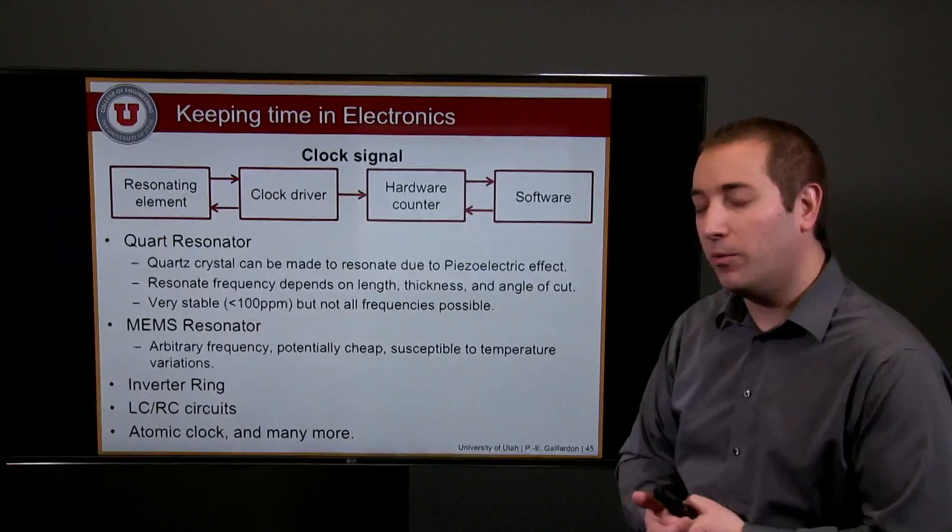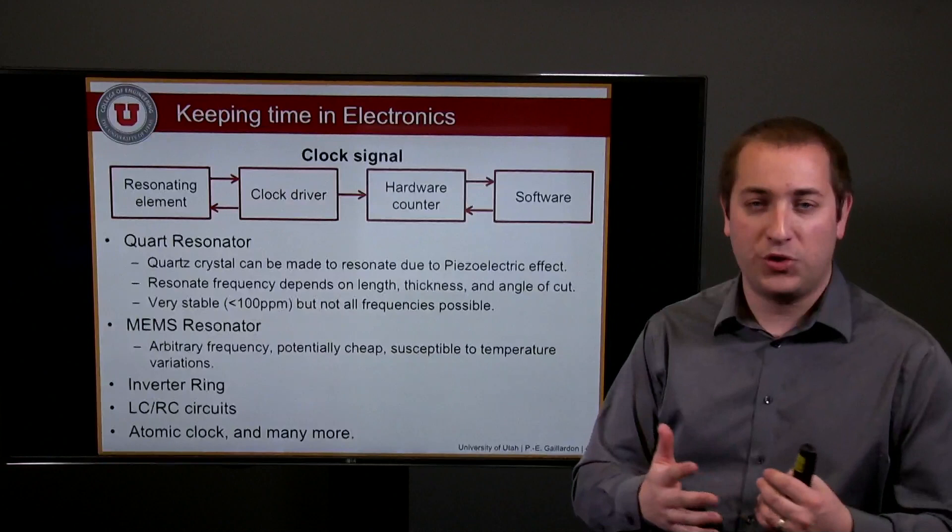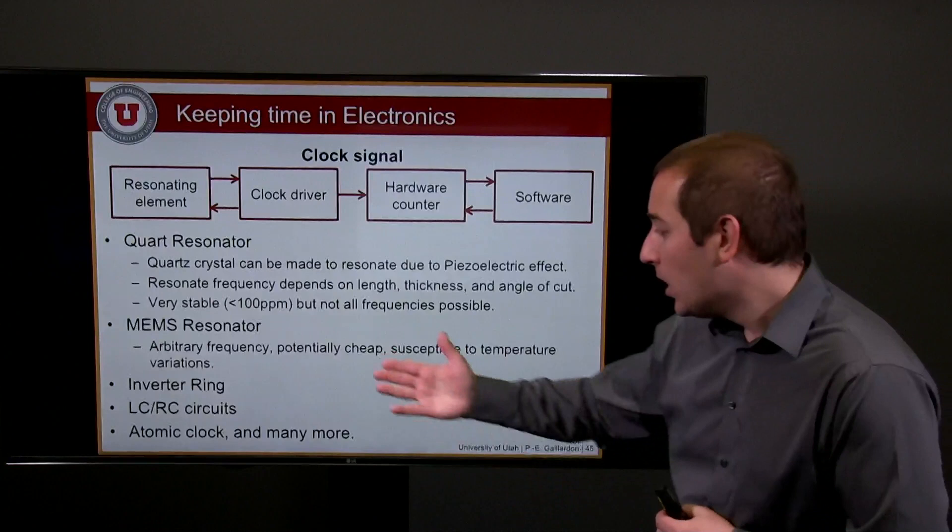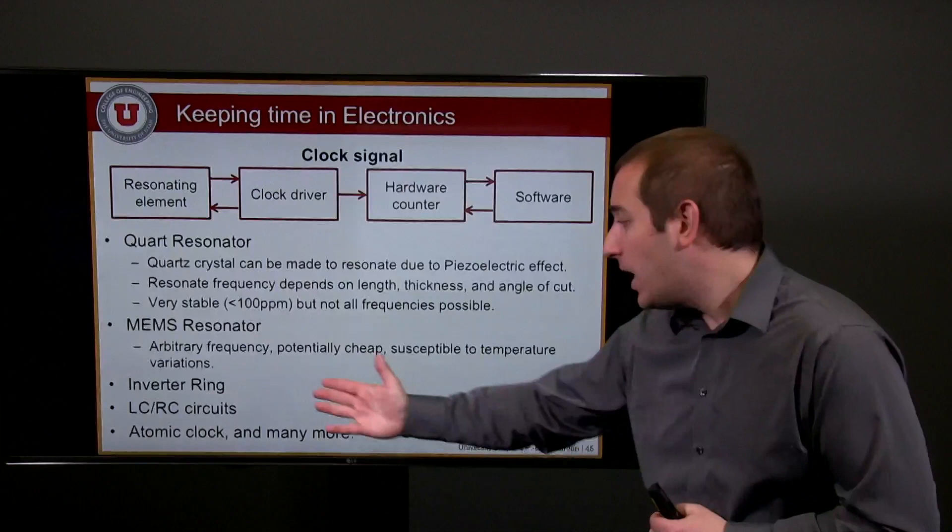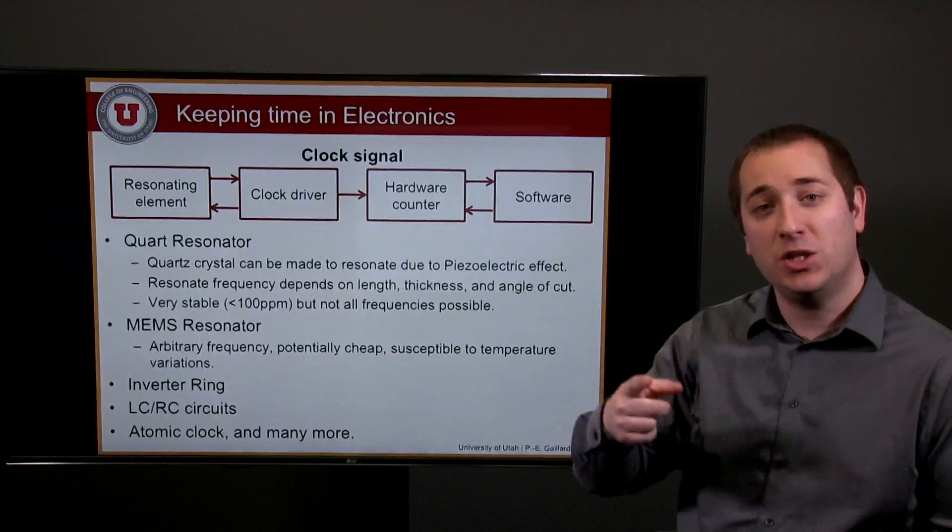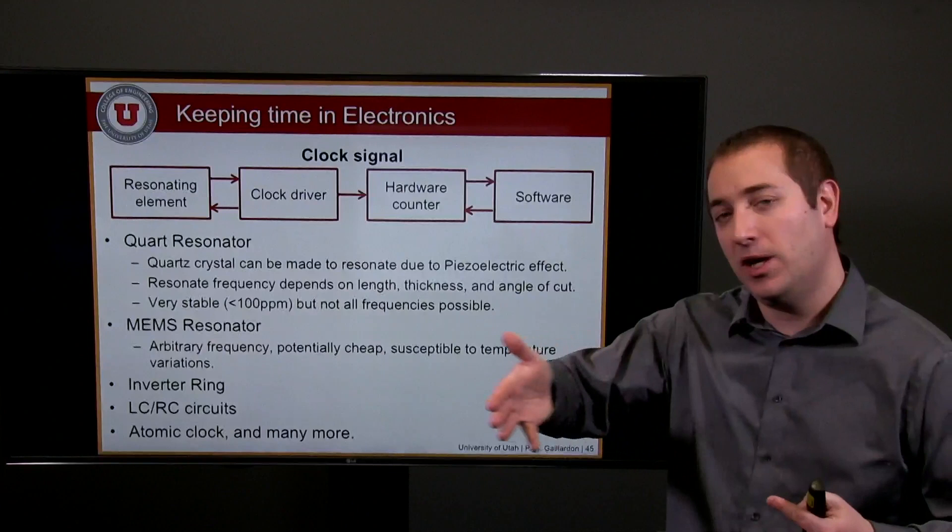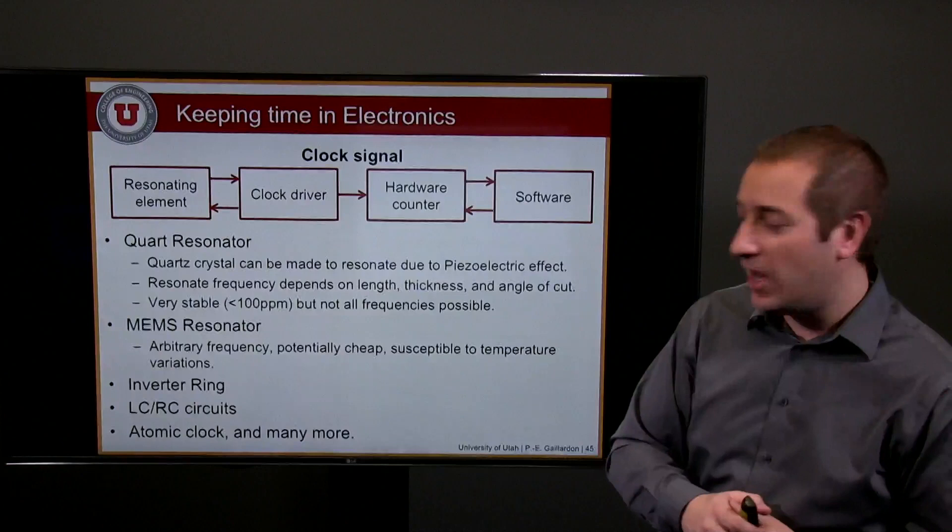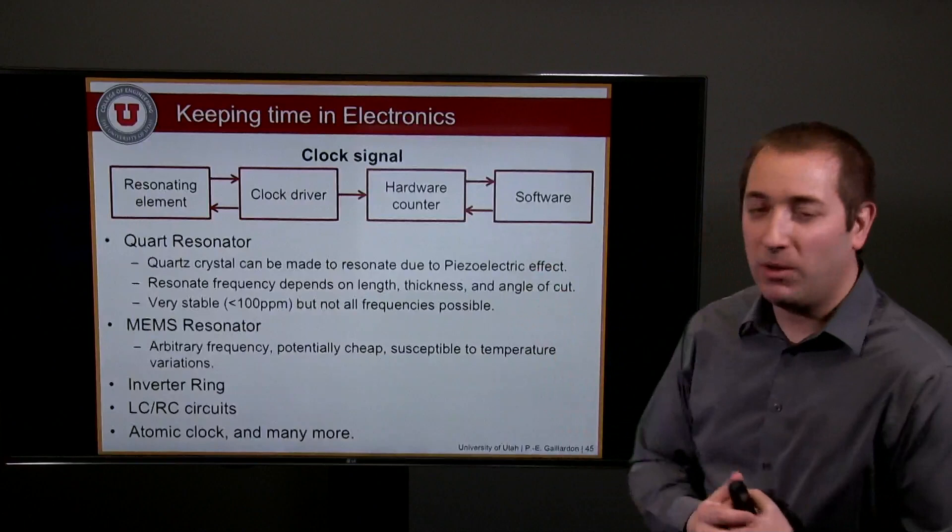Other circuits, more so coming from the CMOS or VLSI technology, will be inverter rings, ring oscillators that will resonate at a given clock frequency, as well as LC and RC circuits, where you'll be able to create oscillations and you'll make sure to add op-amps to regenerate your signal, so you always keep generating a proper frequency for your signal. Finally, there are also all sorts of crazy techniques. Atomic clocks and many more opportunities can be used to generate or to keep time in electronics.